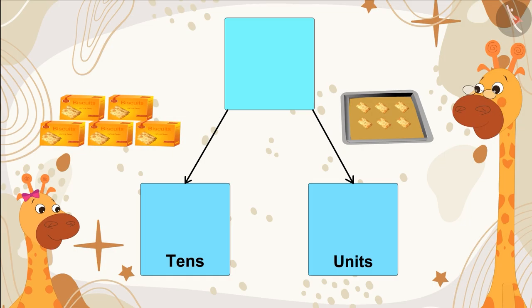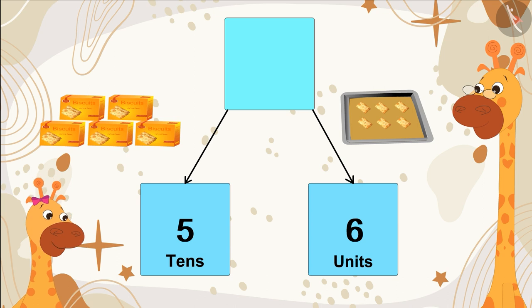And here? There are five tens and six units. Which means fifty and six becomes fifty-six.